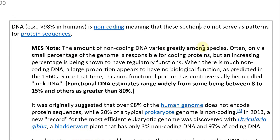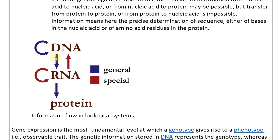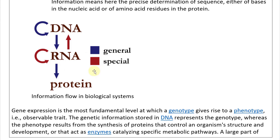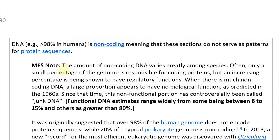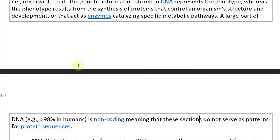A large part of DNA — for example, 98% in humans — is non-coding, meaning these sections do not serve as patterns for protein sequences. The amount of non-coding DNA varies greatly among species. Often only a small percentage of the genome is responsible for coding proteins, but an increasing percentage is shown to have regulatory functions. A large proportion of non-coding DNA appears to have no biological function and has controversially been called 'junk DNA.' Functional DNA estimates range from 8–15% to as high as 80%.